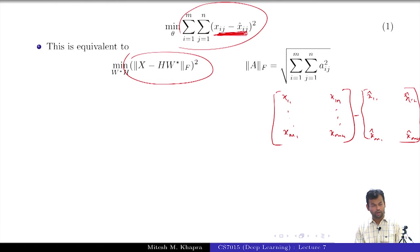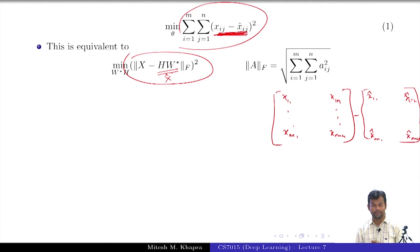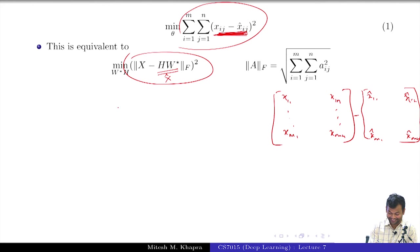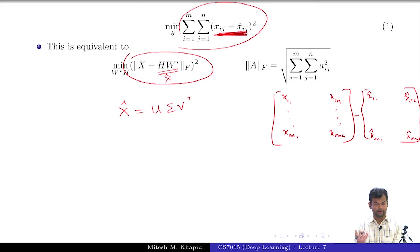Now where have you seen the Frobenius norm before? What did we show in the SVD theorem? Let us try to connect things. What is x-hat? It is a rank-k approximation of X, a reconstruction. What is the solution to this optimization problem? From the SVD theorem, the best approximation to x of a given rank is going to be given by the SVD of X. So HW-star should be equivalent to the SVD-based approximation.